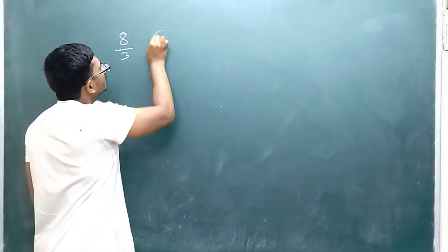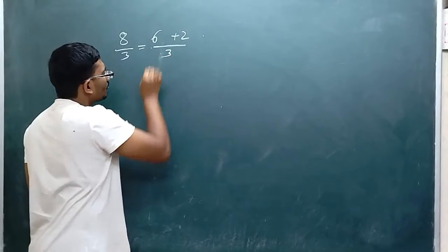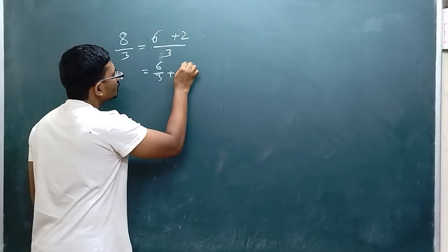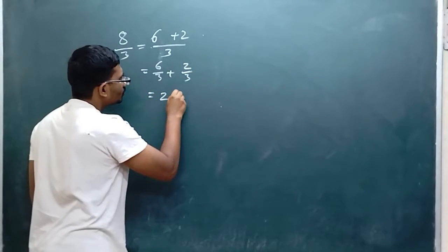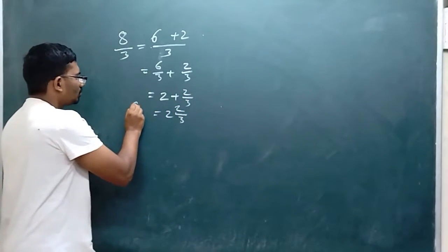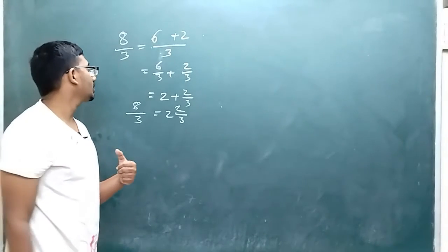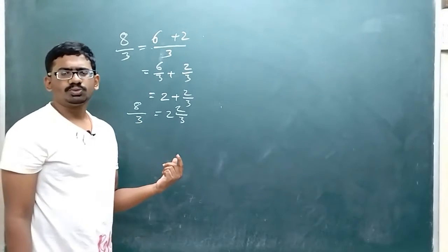So 6 plus 2/3. You can write it as 6/3 plus 2/3. The final answer is 2 plus 2/3, which you can write as 2 and 2/3. This is how you convert an improper fraction to a mixed numeral.